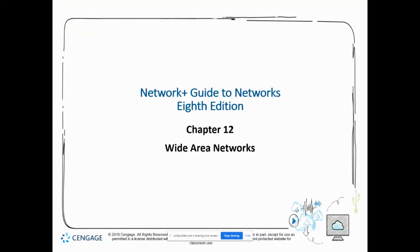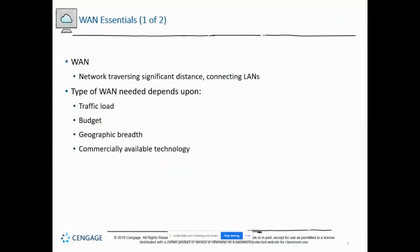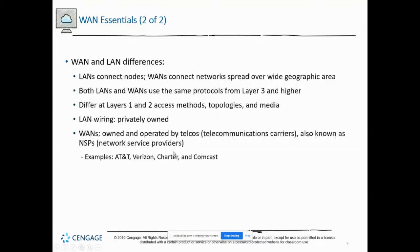We're going to talk about wide area networks tonight. Wide area networks are networks that traverse a significant distance and connect multiple local area networks. The type of WAN we need will depend on traffic, our budget, how big our geographic area is, and what's commercially available through technology.